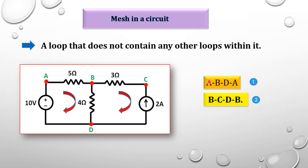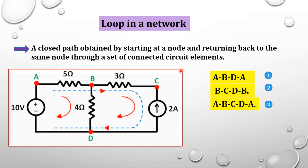To understand the difference between mesh and loop: there are three loops in this circuit — A-B-D-A, B-C-D-B, and the outer loop A-B-C-D-A. However, only the two inner loops, A-B-D-A and B-C-D-B, qualify as meshes because the outer loop contains other loops within it. So every mesh is a loop, but not every loop is a mesh.